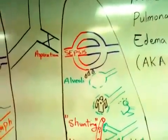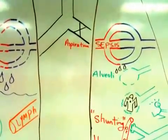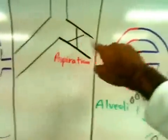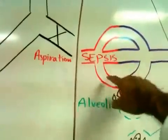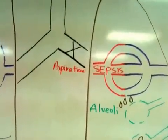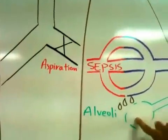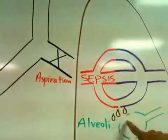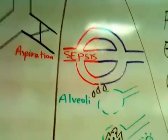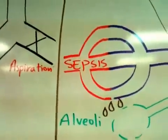ARDS can occur by two problems. One is aspiration, meaning the problem is within the airways. Another one is inside the vessels, and that is sepsis. Due to sepsis or aspiration, we have some kind of epithelial loss.